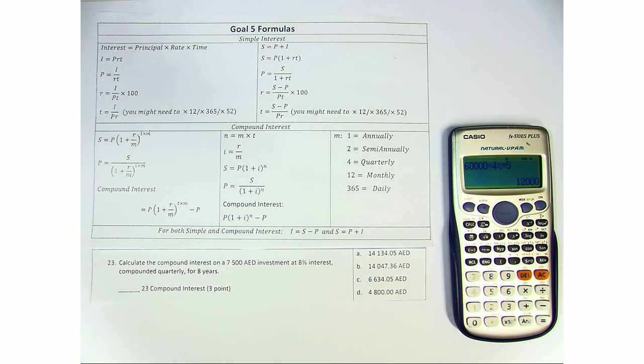Okay, so we're looking at Goal 5, and we're going to look at number 23 from revision A. Calculate the compound interest on 7,500 dirham investment at 8% interest, compounded quarterly, for 8 years.